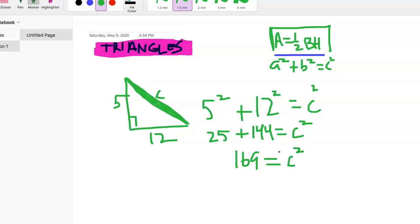From here we need to get rid of that square, so that's our friend the square root. Whatever we do on one side we always got to do on the other. So it happens that 169, the square root of that is 13 - another way of saying that is 13 times 13 is 169. That's our answer, 13.